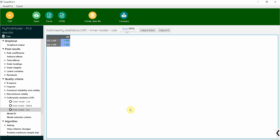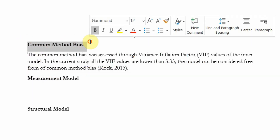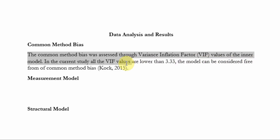Now how do we report these results? Here is a sample. In your data analysis and results section, before the measurement model, you can put in common method bias as a heading and write: 'Common method bias was assessed through variance inflation factor VIF values of the inner model. In the current study all the VIF values are lower than 3.33. The model can be considered free from common method bias.' Then give the reference of Koch 2015. This is how you can use SmartPLS to assess your common method bias.